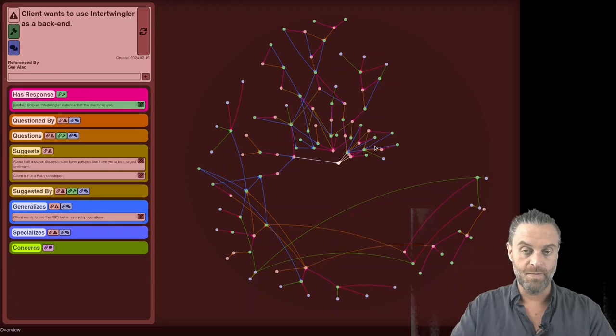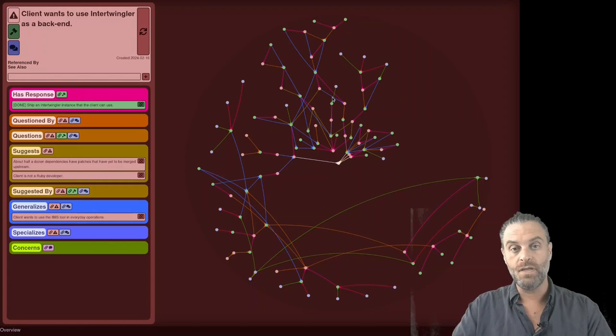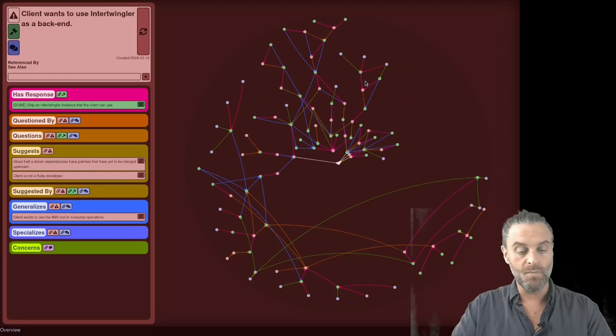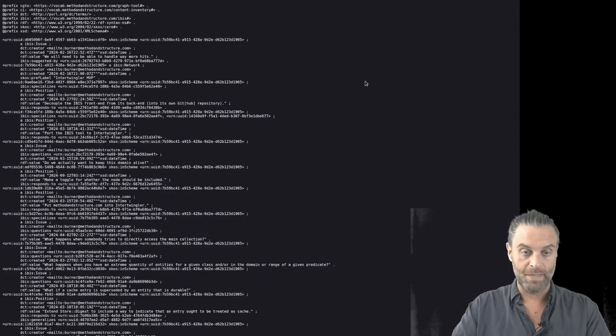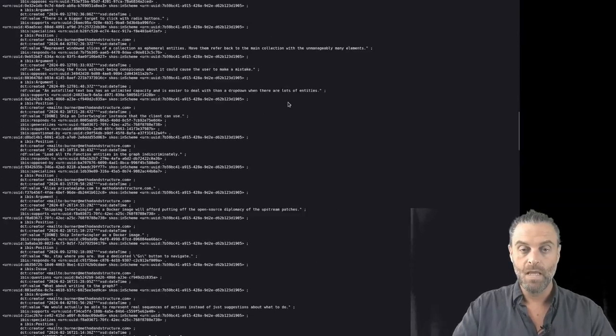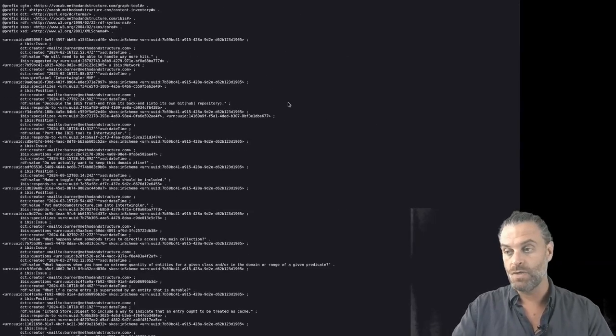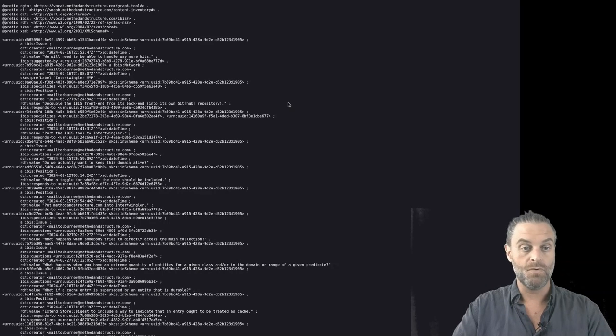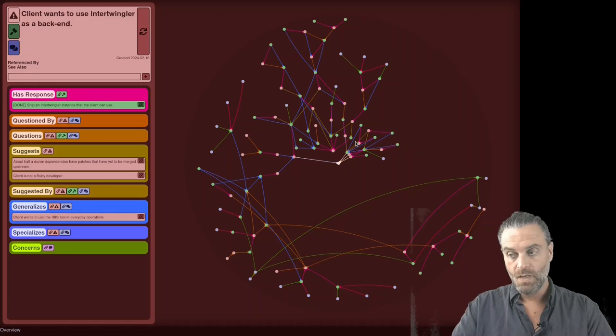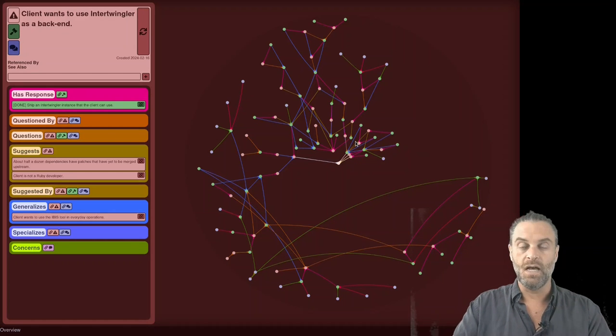The point is, with the graph, that every single element is directly addressable. And furthermore, the data is open. So this is all open data. It's 100% transparent, and you can pull this data out, and you can transform it and do whatever you want with it.